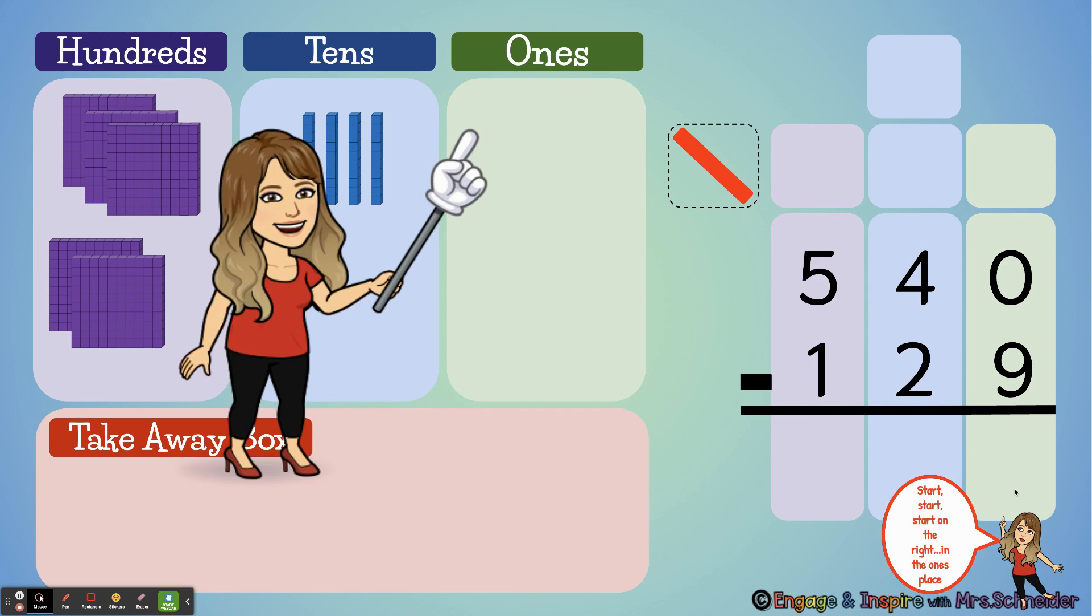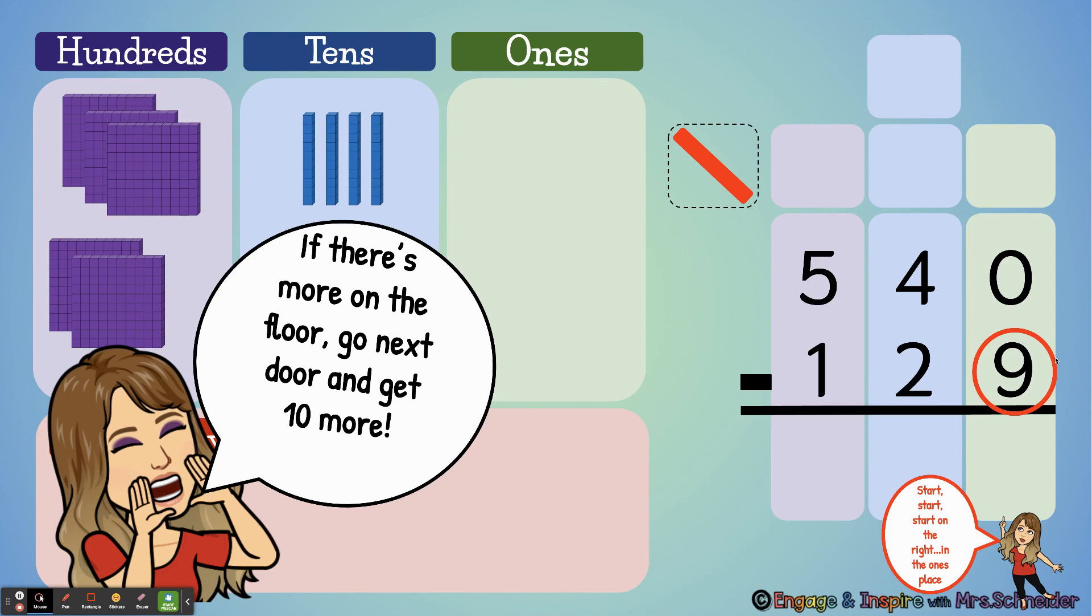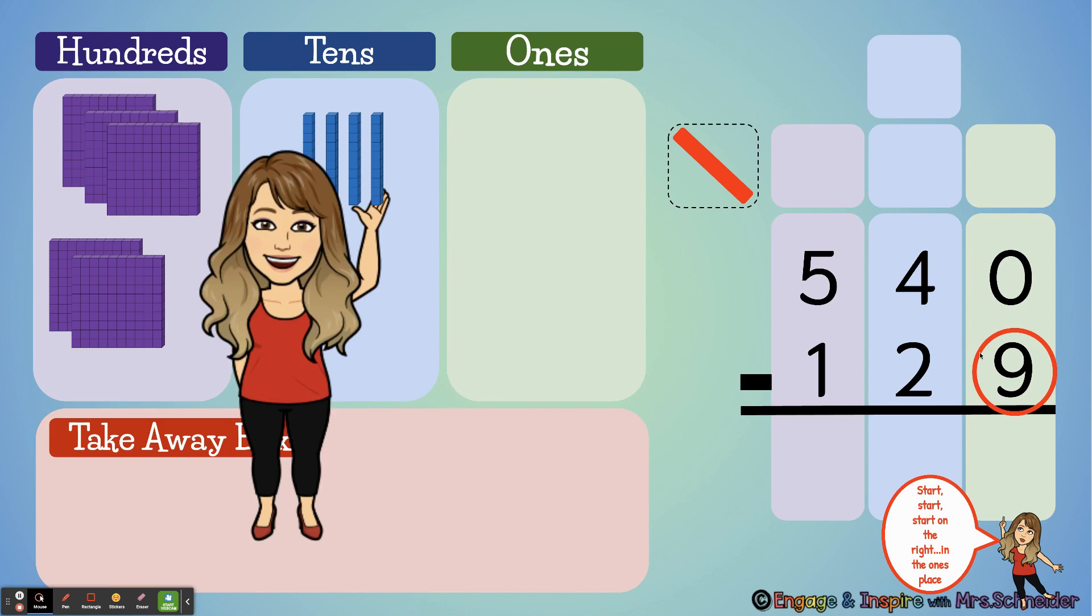To solve this problem we're going to start on the right in the ones place, and we're going to ask ourselves, is there more on the top or more on the floor? Well, there's more on the floor here, and if there's more on the floor we're going to go next door and get ten more. So here I am going next door to the tens and I'm going to get ten more.